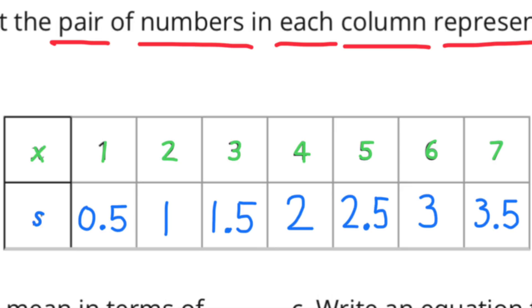When filling out the S coordinates, count by 5 tenths: 5 tenths, 1, 1 and 5 tenths, 2, 2 and 5 tenths, 3, and 3 and 5 tenths.